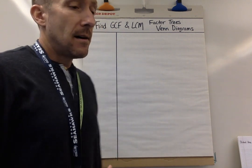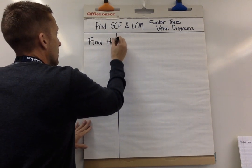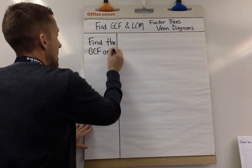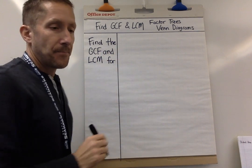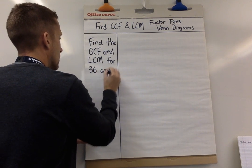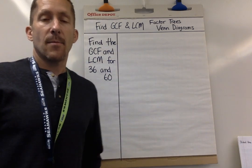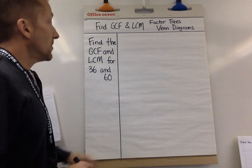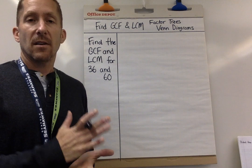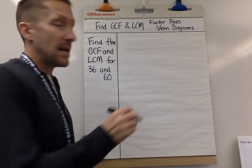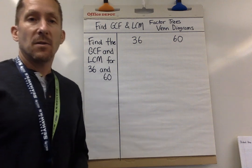This lesson is showing you another way to find greatest common factor and least common multiple. The problem we're going to look at is: find the greatest common factor and the least common multiple for the numbers 36 and 60. The first thing we're going to do is use factor trees to get what's called the prime factorization for each number.